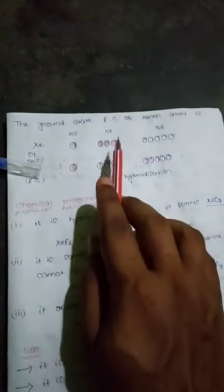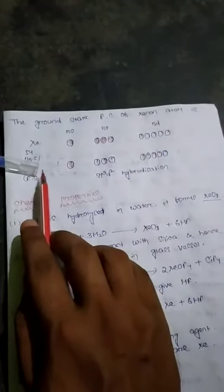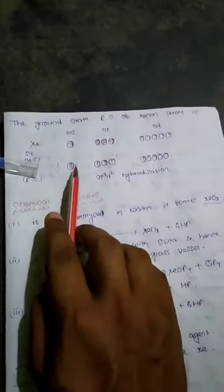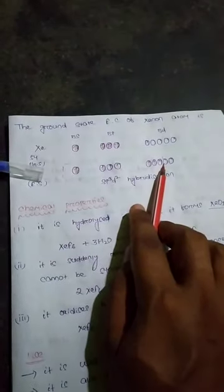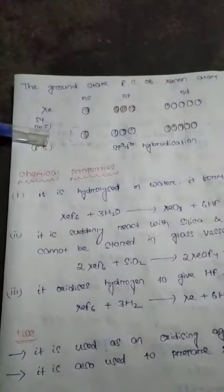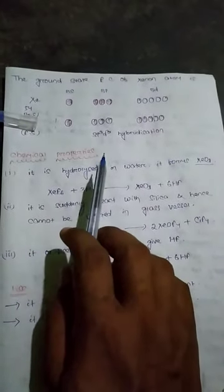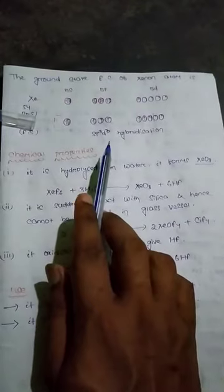So the ground state electron configuration of xenon atom for XeF6 formation is sp3d3 hybridization. Electronic configuration structure.